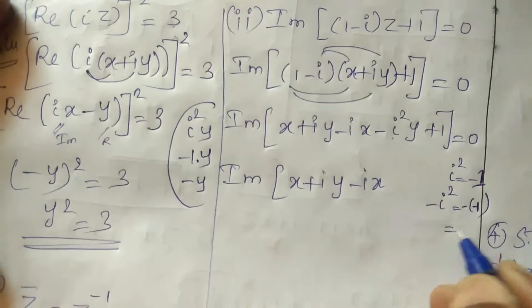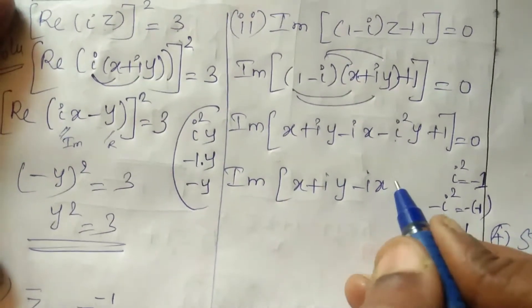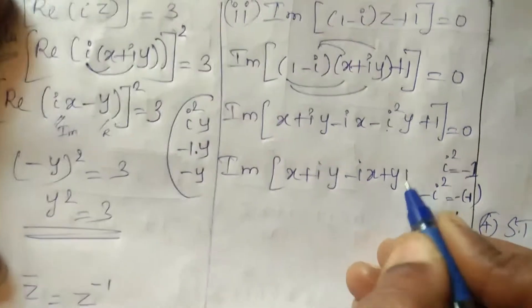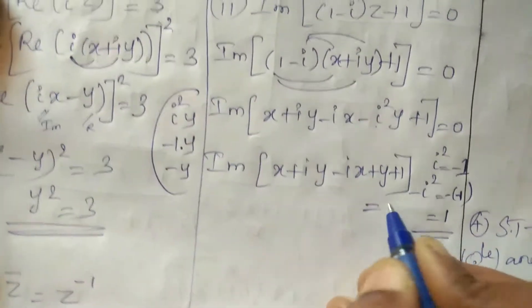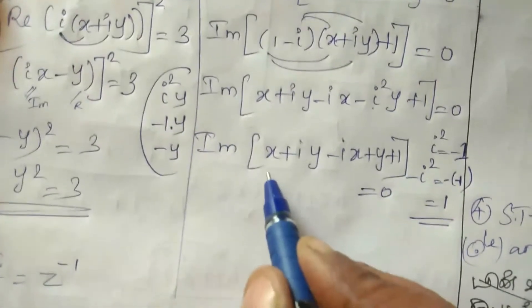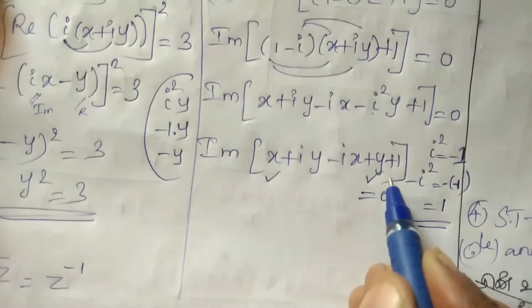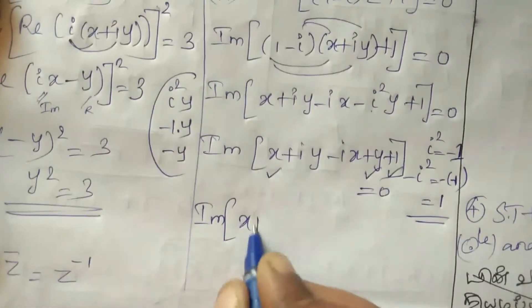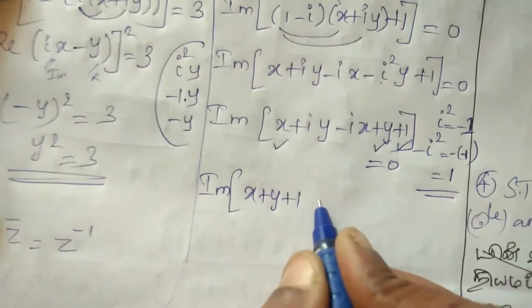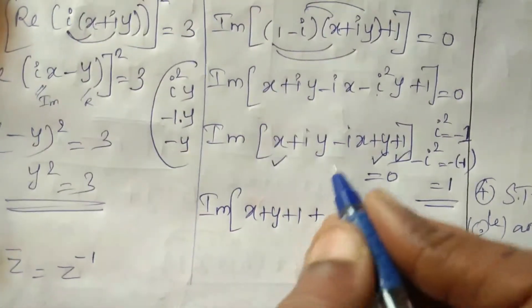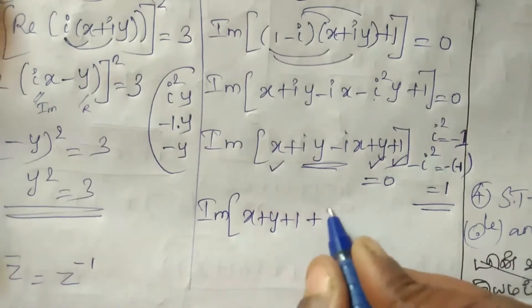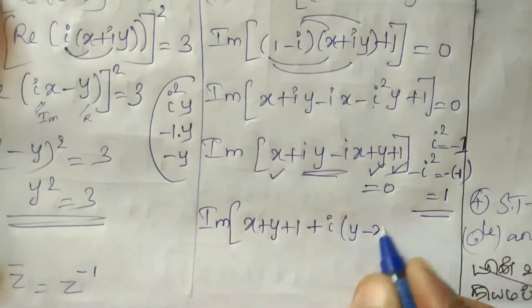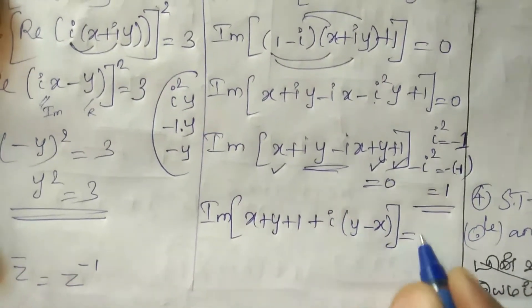So plus 1, Y plus 1 equal to 0. So the real part is X plus Y plus 1, separate from Y. Imaginary is minus IY plus IY minus X, with I as common term equal to 0.